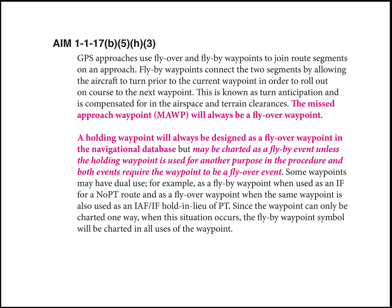The AIM makes this clear in section 1-117, where they say the missed approach waypoint will always be a fly-over waypoint. They go on to say a holding waypoint will always be designated as a fly-over waypoint in the navigational database. However, the charting may be a little bit different.